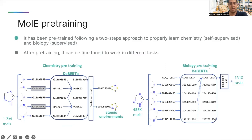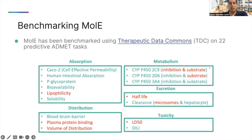After pre-training, Mole can be easily fine-tuned on downstream tasks, achieving very good performance. We benchmark Mole using the ADMET group of the Therapeutic Data Commons. This benchmark consists of 22 different tasks, including both classification and regression. The number of data points in this benchmark ranges from very few hundreds to a few thousands, which is the normal and standard size of datasets used in a drug discovery project.